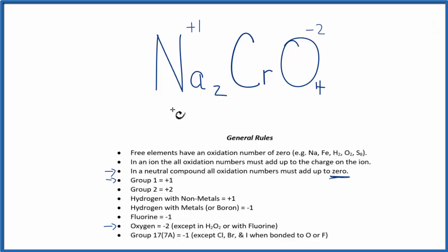So we have 2 times plus 1, that's 2, plus we don't know what the chromium is, and then we have 4 times minus 2, that's minus 8. So all of that adds up to 0.